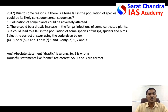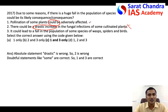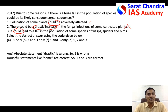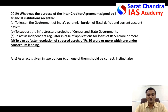For the next question, as I told you, absolute statements are wrong — for example, 'drastic increase' is an extreme absolute statement, so it is wrong. But doubtful statements like 'could affect,' 'it could lead to a fall,' or 'it may lead to' are generally correct. So statements one and three are correct, two is wrong — and that gives you the answer.